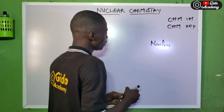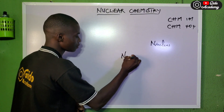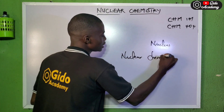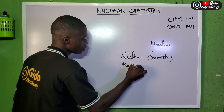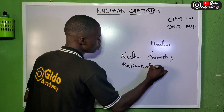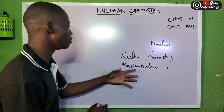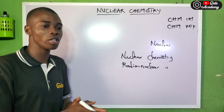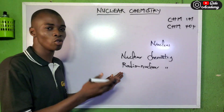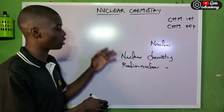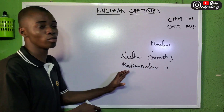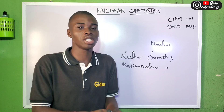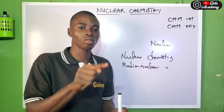Please take notes: nuclear chemistry is the same thing as radionuclear chemistry. So it's either you call it nuclear chemistry or you call it radionuclear chemistry. Please note there is a great difference between nuclear chemistry and radioactivity. Nuclear chemistry is a branch of chemistry that deals with changes that occur in the nucleus of an atom.